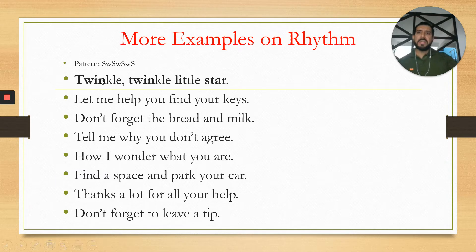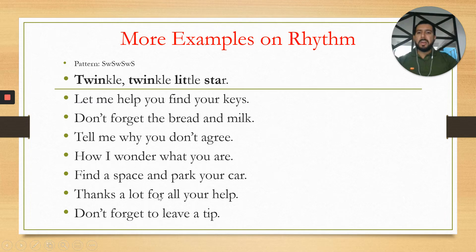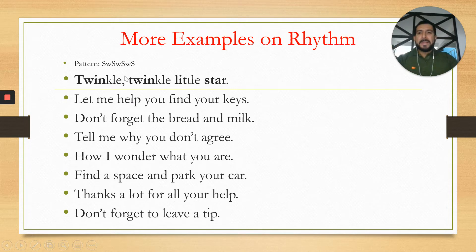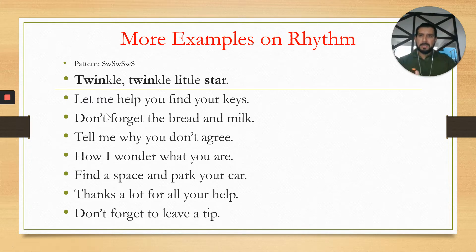Here are more examples of how you can achieve rhythm. When you have a perfect pattern of stressed and weak syllables (S-W-S-W), you get things like: 'Twinkle, twinkle, little star,' 'Let me help you find your keys,' 'Don't forget the bread and milk,' 'Tell me why you don't agree.' In the real world, you'll find more than just stressed and unstressed patterns — sometimes stressed-stressed-unstressed or multiple unstressed syllables. The bottom line is that you should be able to reduce or almost delete function words, which are grammatically important but not critical for pronunciation.